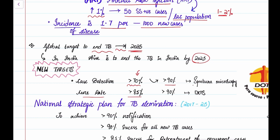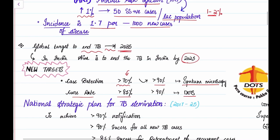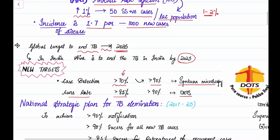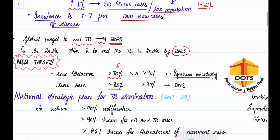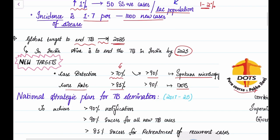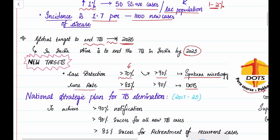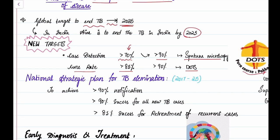Case detection is mainly done by sputum microscopy, whereas cure rate is by DOTS, Directly Observed Treatment Short Course Chemotherapy. So DOTS, this is the DOTS symbol where it's saying Pura-Kos and Pakka-Ilai, which means you complete the course and you'll be completely treated of TB. In this process, the patient takes treatment under the supervision of a DOTS agent who sees that the patient completes the course fully and is treated.